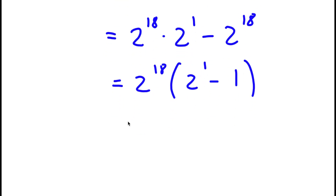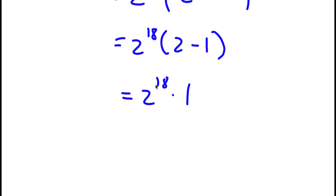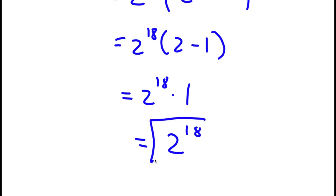Now 2 to the power of 1 is simply equal to 2, so I have 2 to the power of 18 times 2 minus 1. And 2 minus 1 equals 1, so now I have 2 to the power of 18 times 1, which is simply 2 to the power of 18.